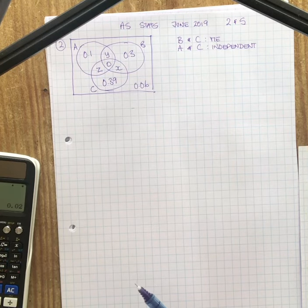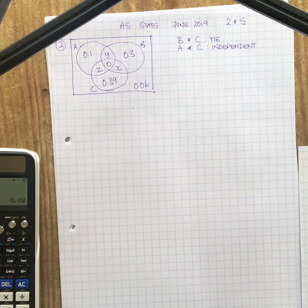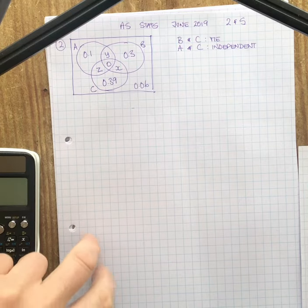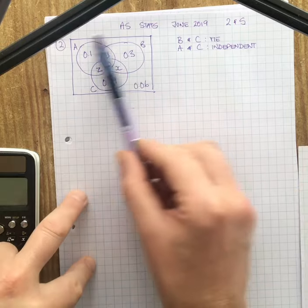Okay, AS 2019 statistics paper, questions 2 and 5. Question 2 is about Venn diagrams.